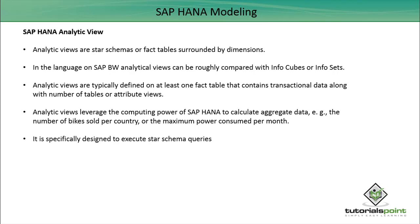Compared to SAP BW, analytic views are roughly equivalent to info cubes or info sets. They are typically defined on at least one fact table containing transactional data, along with attribute views or dimension tables. Analytic views leverage the computing power of SAP HANA to compute aggregate data — for example, the number of bikes sold per country or the maximum power consumed per month. These represent common reporting needs, and the system is specifically designed to execute star schema queries.